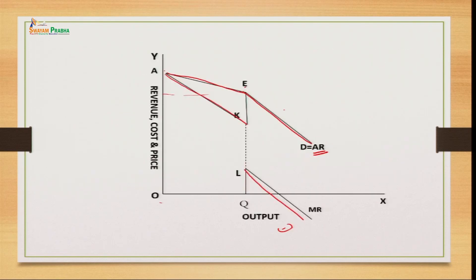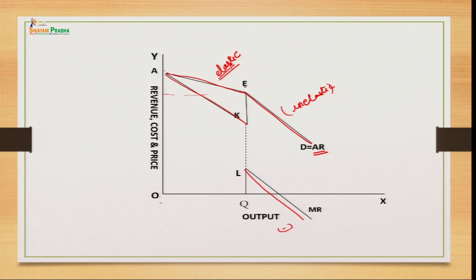So the kinked demand curve model — or price rigidity model — shows that it will be beneficial for the firm to sell at the price jointly determined by all firms, rather than making individual decisions. There is a sort of price rigidity because neither an increase in price nor a decrease in price will give benefit to an individual firm. If price reduction continues with all firms following, the marginal revenue curve can even go below zero, which is not good for the firm.